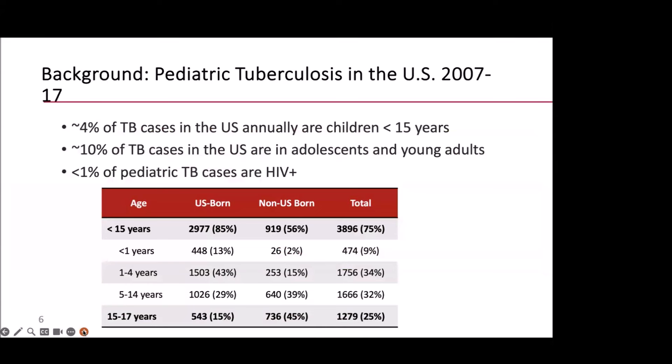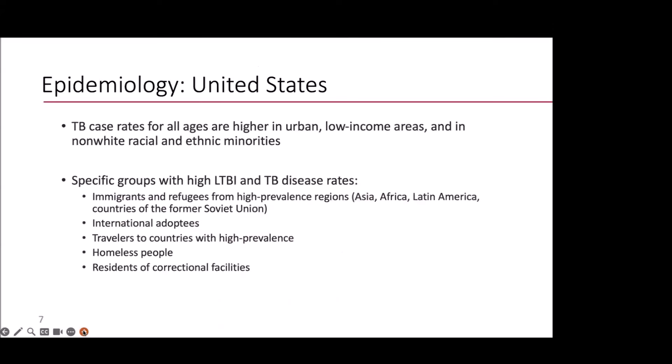Tuberculosis in the United States: about 4% of TB cases annually are children less than 15. More adolescents and young adults account for about 10% of TB cases overall. We see very little TB-HIV co-infection in children in the U.S., less than 1%. TB case rates for all ages are high in urban, low-income areas, as well as in non-white racial and ethnic minorities. This is the same for children. The epidemiology of pediatric TB largely follows the epidemiology of adult TB in the United States.